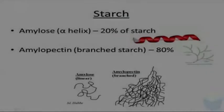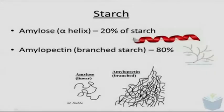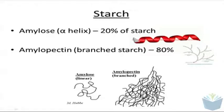Hi and welcome to my third video in this series about carbohydrates. Today we are going to look at polysaccharides. The first polysaccharide we have to know about is starch, and starch is a storage molecule found in plants. It comprises two types of carbohydrates: amylose, which comprises 20% of it, and amylopectin, which comprises about 80% of it.